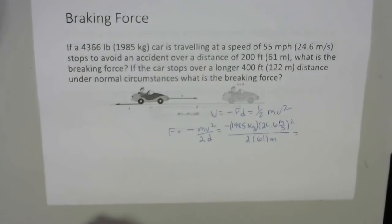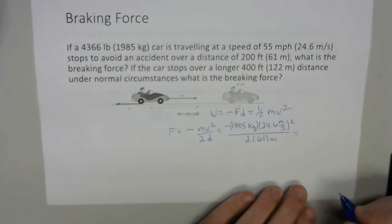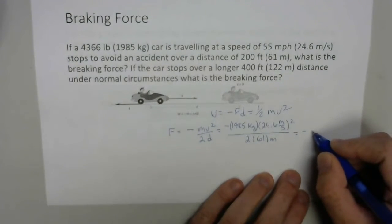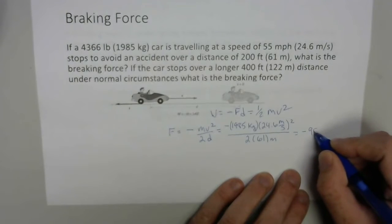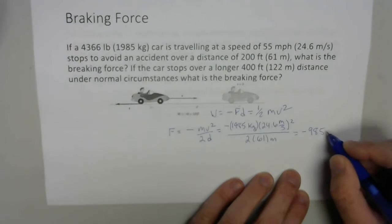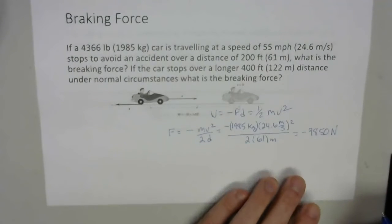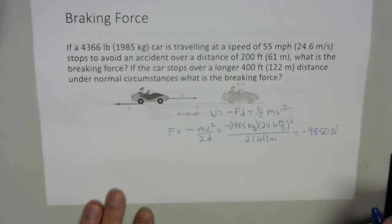1985 times 24.6 squared divided by 2 times 61. You get a negative, essentially 9850, we'll say, to three sig figs, newtons. And so that's the braking force. We're stopping a car, so we'd expect a big number. So that's not a big deal.